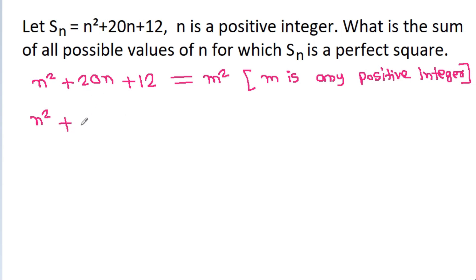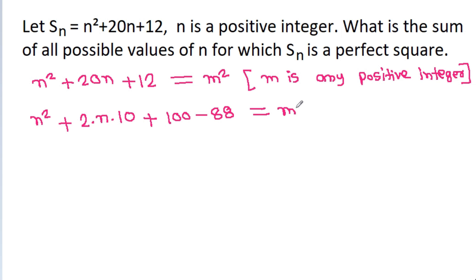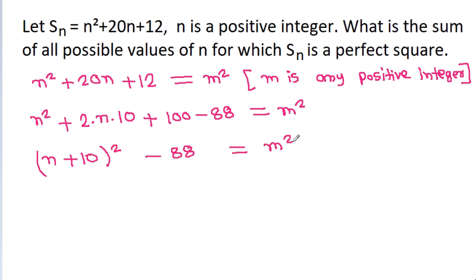So n squared plus 20n — note that 20n equals 2 times n times 10 — and 12 can be written as 100 minus 88. This gives us n squared plus 2 times n times 10 plus 100, which equals m squared.